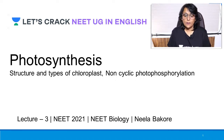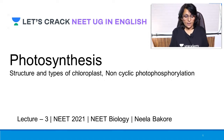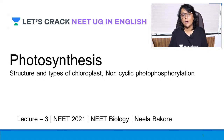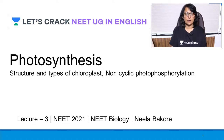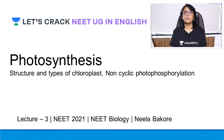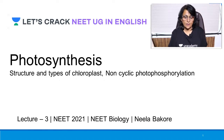Welcome to Let's Crack NEET UG English. We will be continuing with our chapter on photosynthesis. The points we will cover are the structure and types of chloroplasts. We discussed the basic structure in the previous lecture, but we will take it up in more detail so the next step is clear. The next step is the light reaction, and today we will be talking about non-cyclic photophosphorylation.